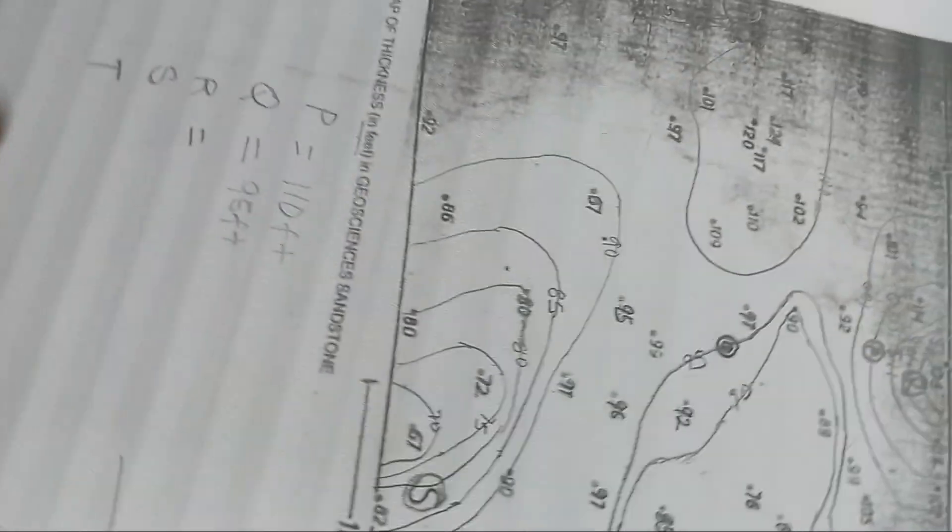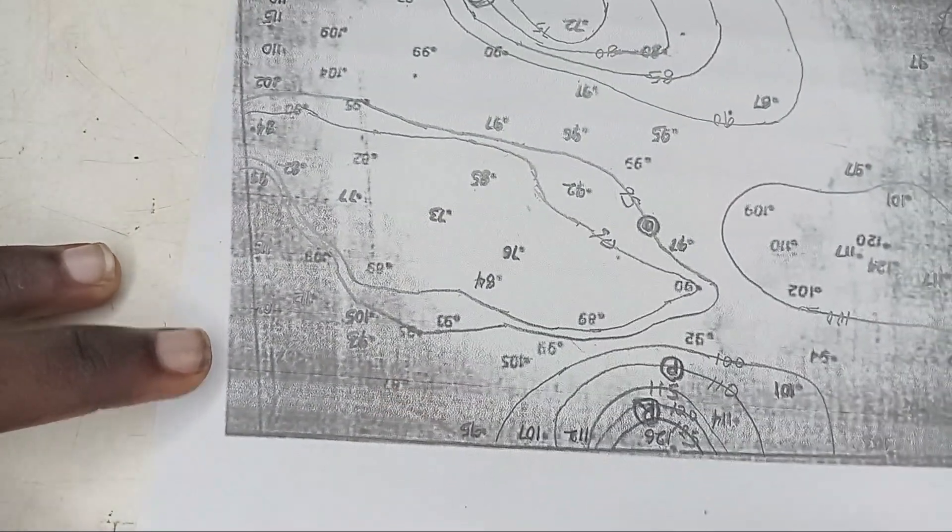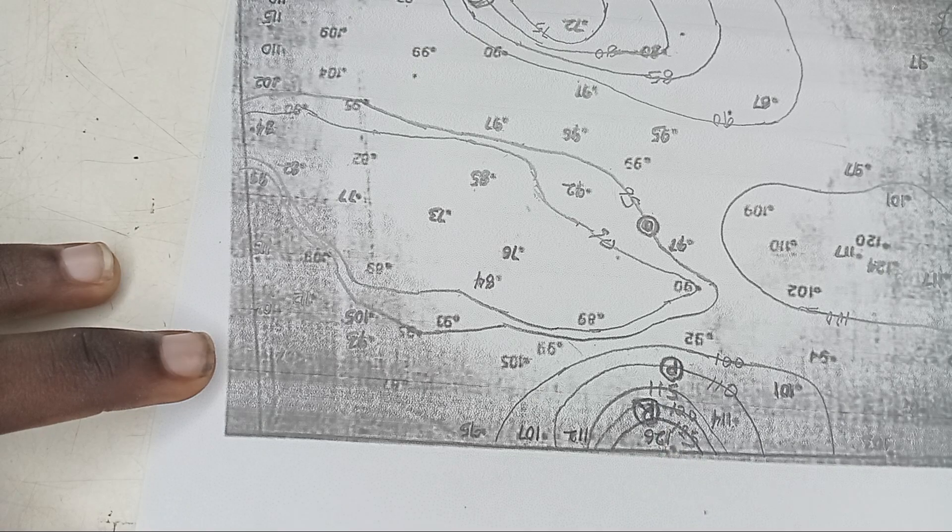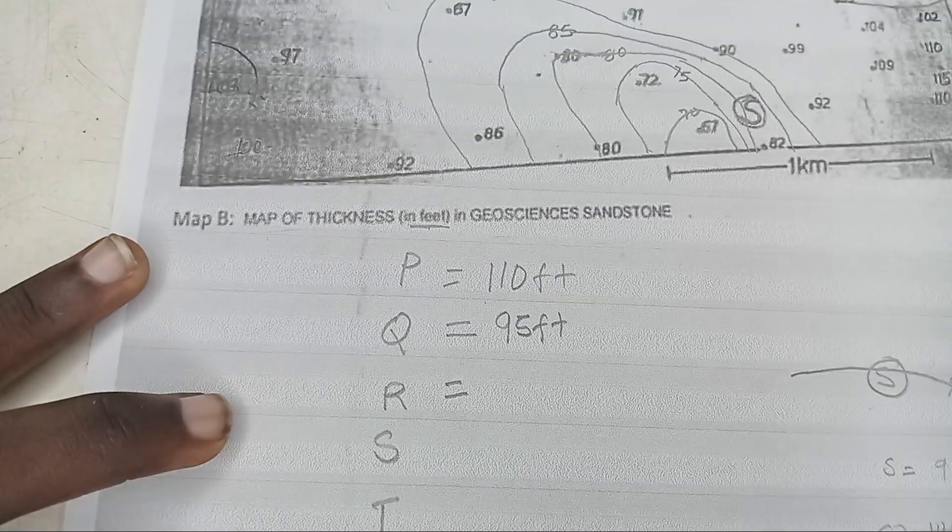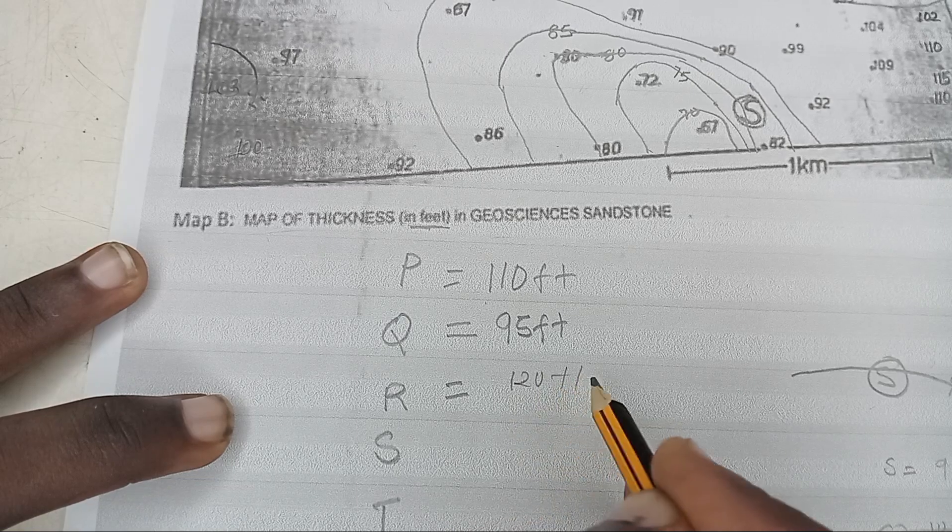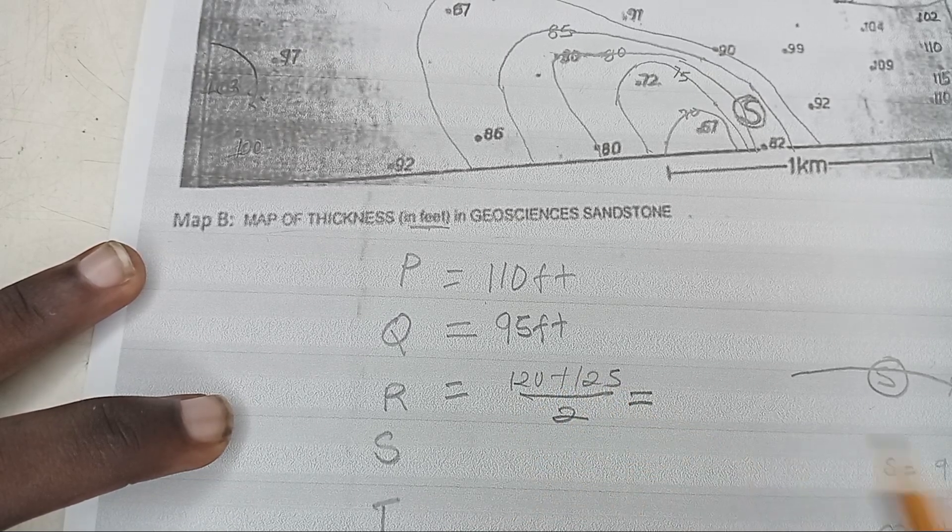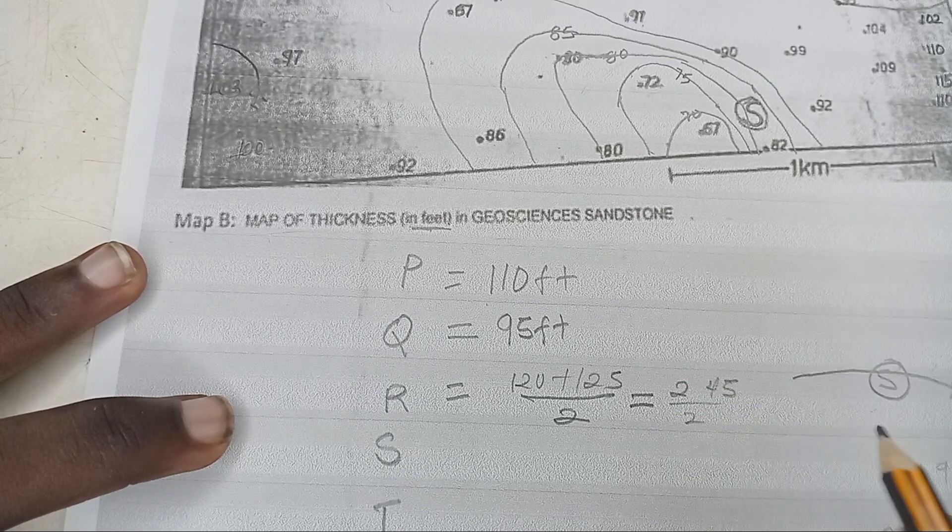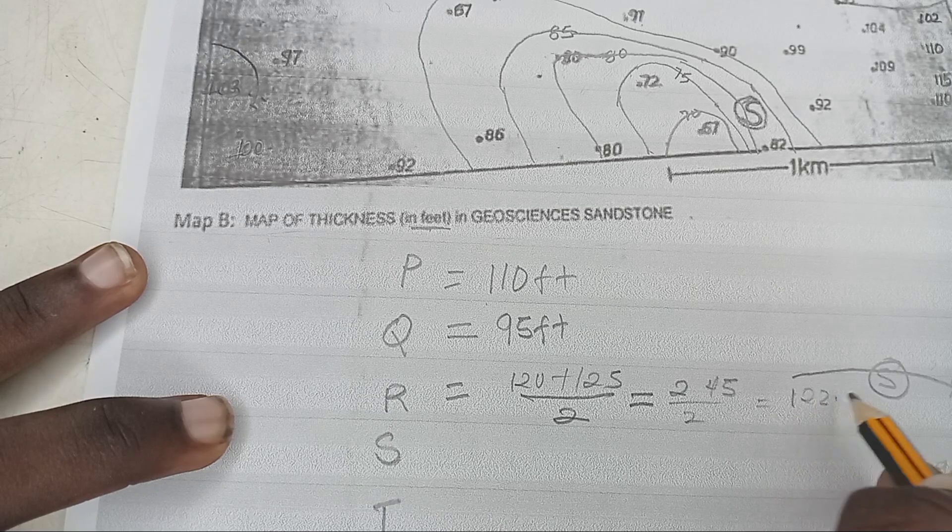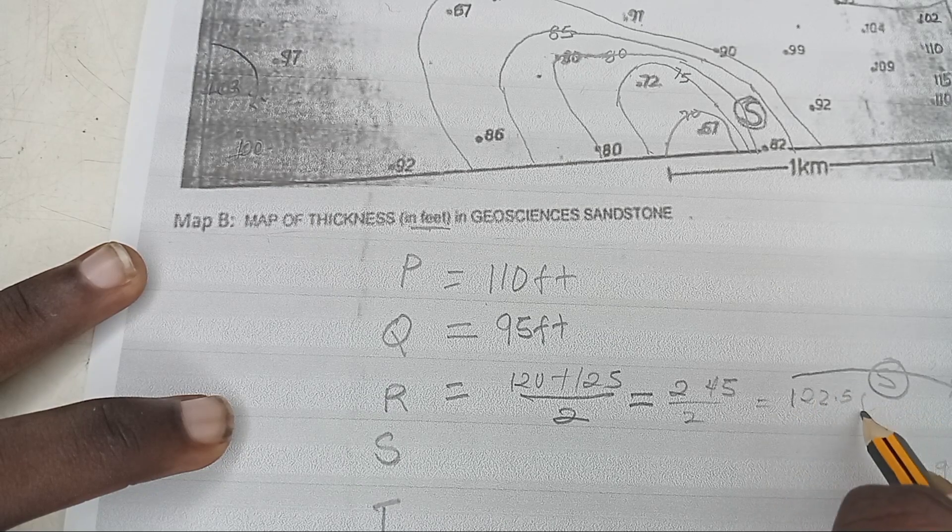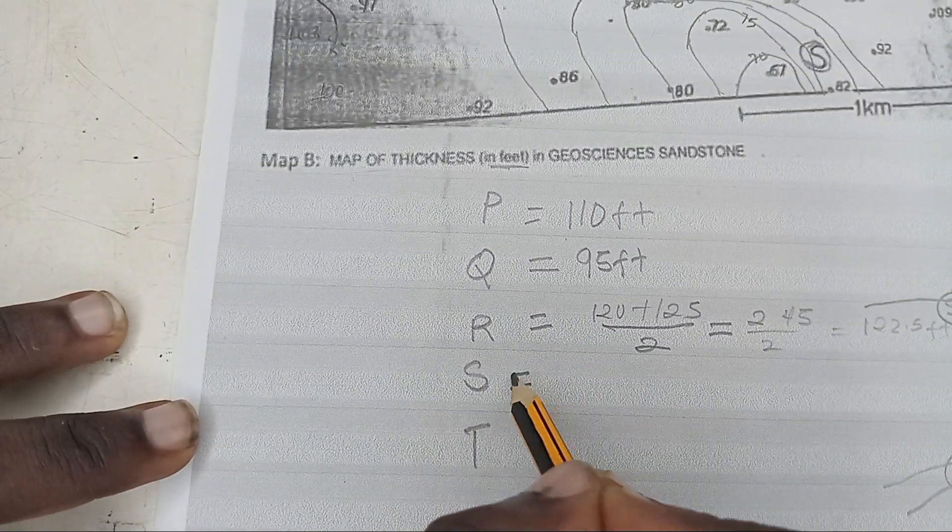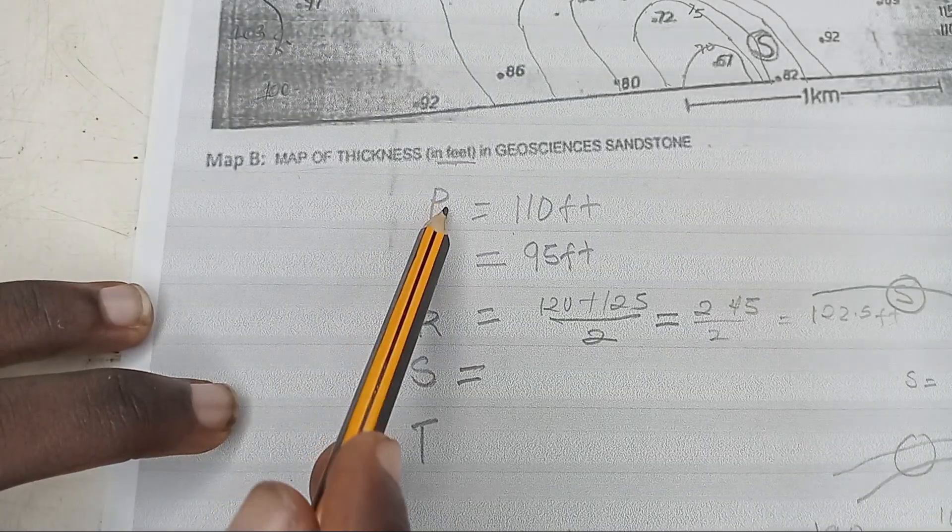Now for Q, where's my Q? This is my Q. Only one contour passed through Q. What's that contour? 95. So this is only one contour, we don't find any mean. So everything is 95 feet. For my R, where is my R? We have 125, 120. Those are the two that passed through it. So we just find the mean of 120 plus 125 over 2. That gives 245 divided by 2, and that's 122.5 feet. Just leave it like that.